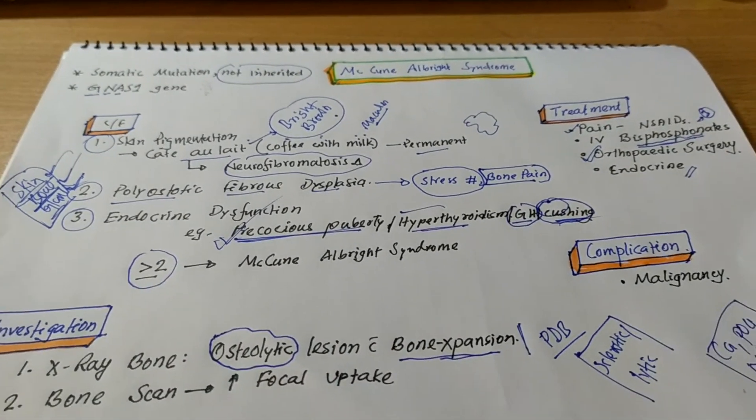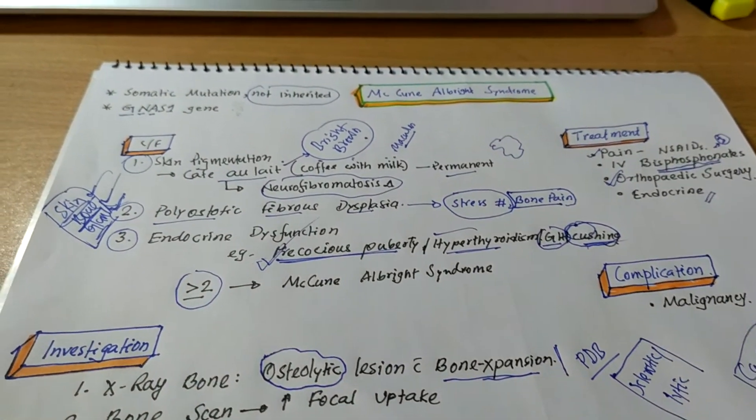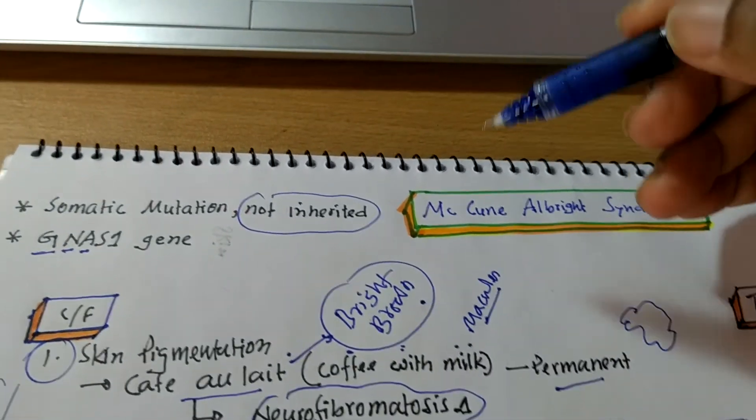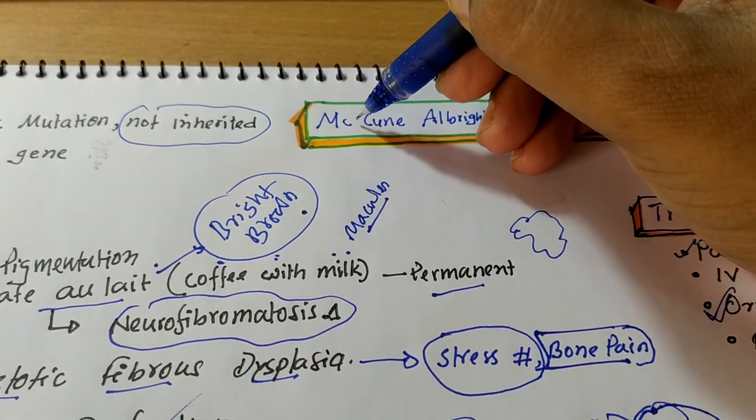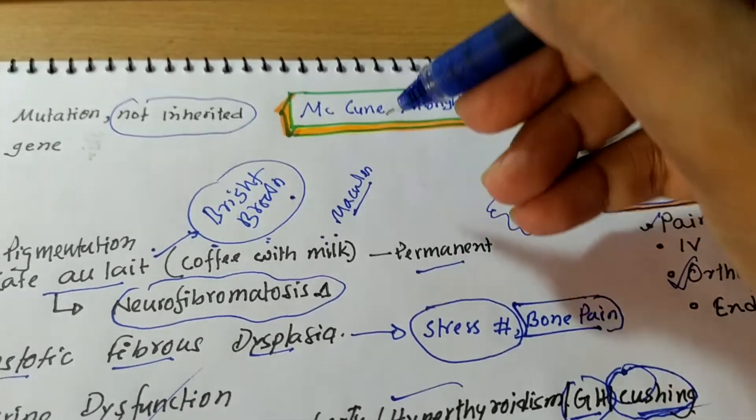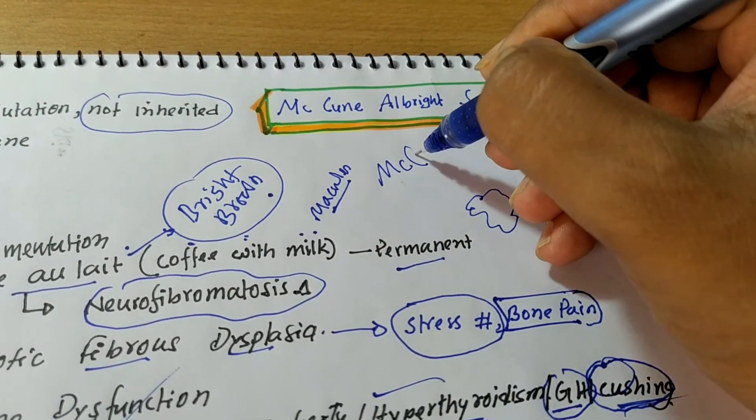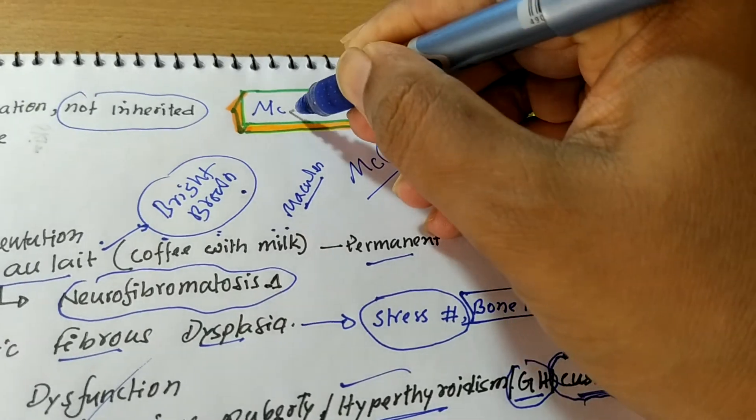So this is all about McCune-Albright syndrome. And lastly, here the spelling, the McCune, there is no S space actually. It should be like this, McCune, M-C-C-U-N-E. Okay. There is no S space here.